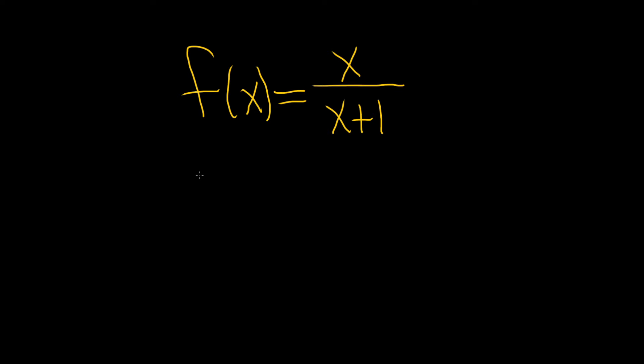In this problem, we have a rational function, and we're asked to find all vertical asymptotes and holes.